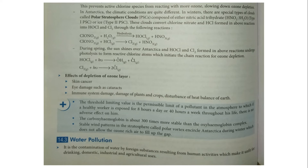The effect of depletion of the ozone layer includes skin cancer. UV light passes straight through the damaged layer, causing high levels of skin damage, immune system damage, and damage to plants and crops.